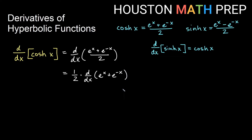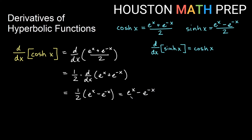A similar thing is going to happen here that happened when we did the last one. We will keep our 1/2. The derivative of e to the x will be e to the x, and then the derivative of e to the negative x is e to the negative x, but the chain rule will give us minus e to the negative x. If I put my 2 back on the bottom, you will notice something that is perhaps close to what we expected — this is actually exactly sinh of x.